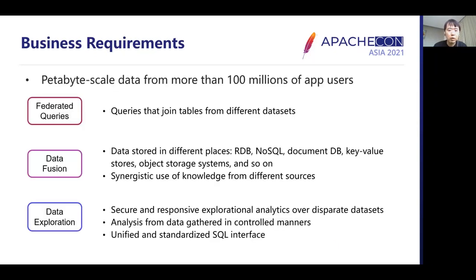CNB has two mobile apps with almost 100 million users respectively, and more than 100 million monthly active users in total, which makes the data PB-scale. These data are stored in different places. We need federated query to join tables from different datasets, and we need data fusion — combining data from several databases to improve performance and accuracy. We also need data exploration: using one SQL engine to provide a simple tool to achieve basic understanding of several datasets.